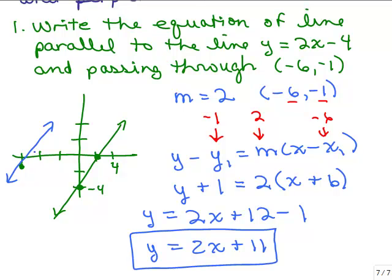Looking at our picture, does it look like it goes through a y-intercept of 11? That seems reasonable — here's 4, 6, 8, 10 — it was a rough estimate, not a perfect graph, but that looks correct. You'd want to make sure that when you plug in negative 6, negative 1 into this equation, it's an ordered pair on this line — which it is — and it still has a slope of 2. Everything looks good.